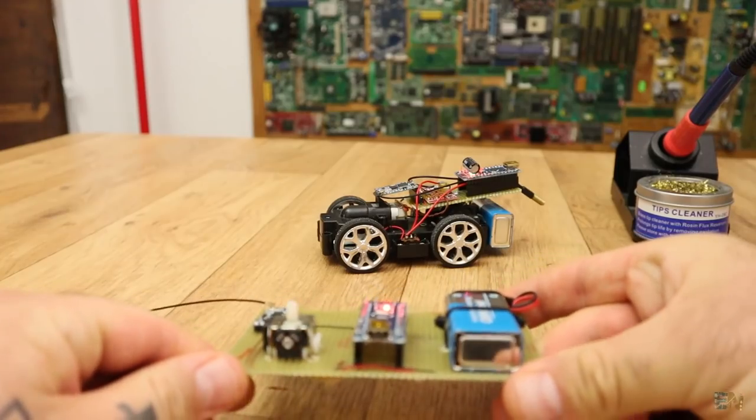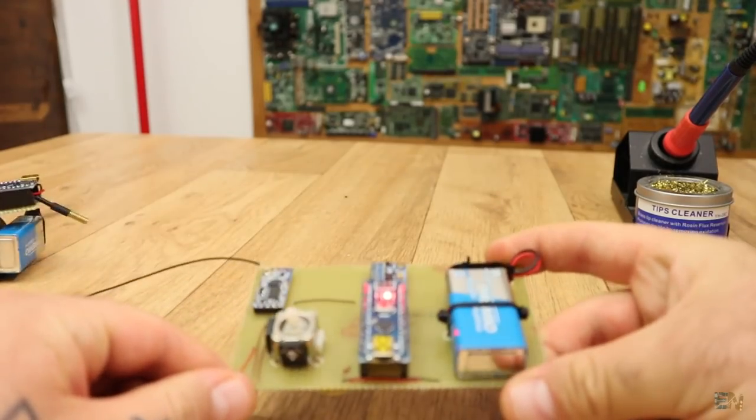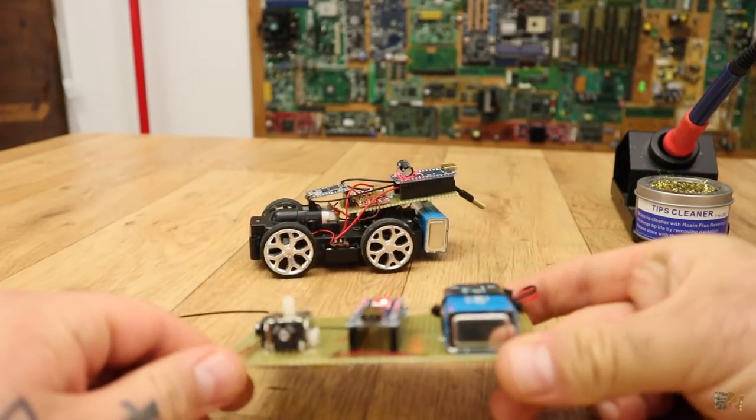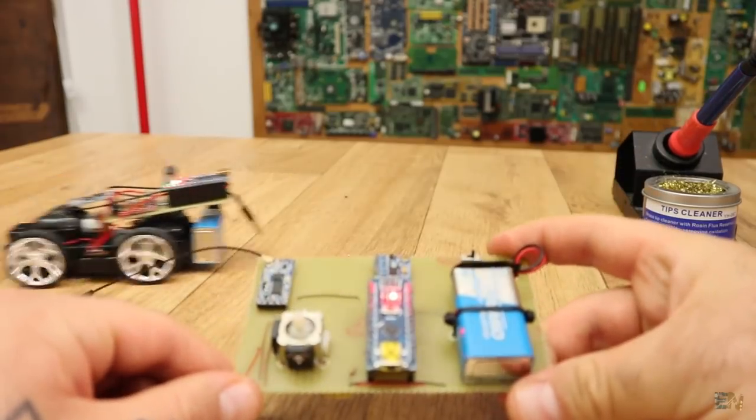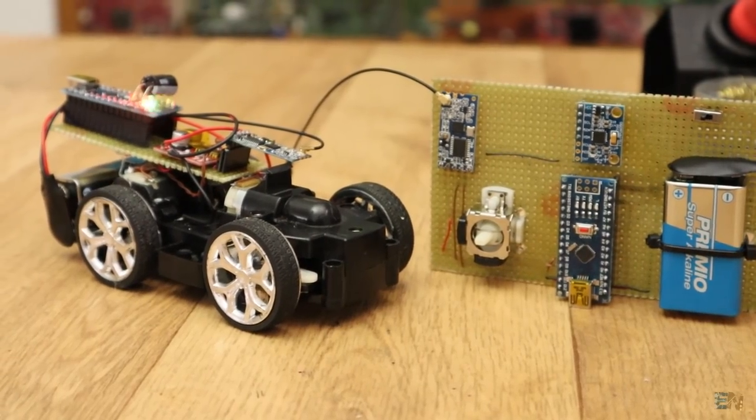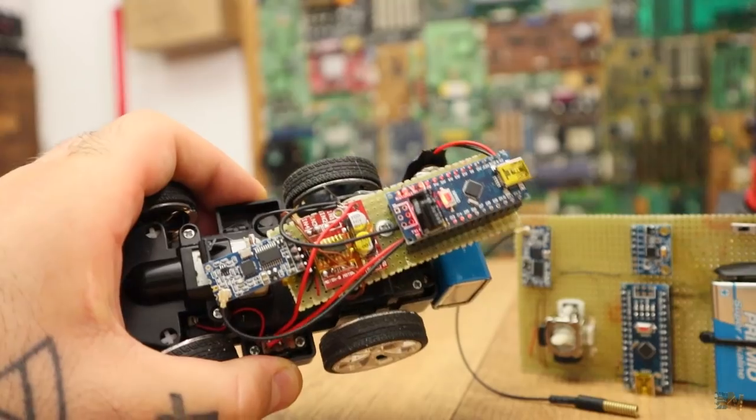So there you have it. Check the links below for all the schematics, the codes and more information on my webpage electronoobs.com. Now you know how easy is to use the HC12 modules with just a few lines of code and using the software serial of the Arduino. I hope that this project was interesting and that you have learned something new.